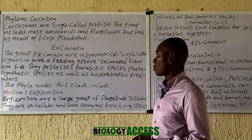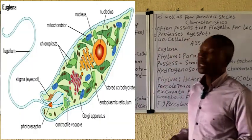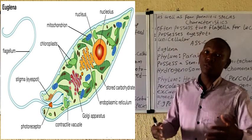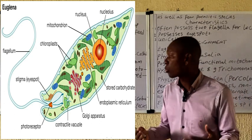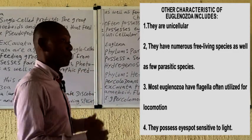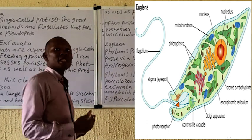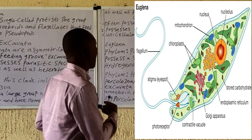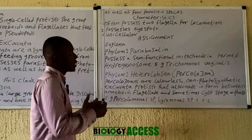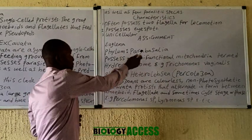Let's start with the Euglenozoa, which is actually a large group of flagellate protozoa. Their characteristics include the fact that they are unicellular — we all know Euglena viridis. They usually possess a flagellum for locomotion. Many species are free-living while some may be parasitic. They have an eyespot which is sensitive to light, as you can see in the diagram of Euglena, and this eyespot makes them move towards a light source.